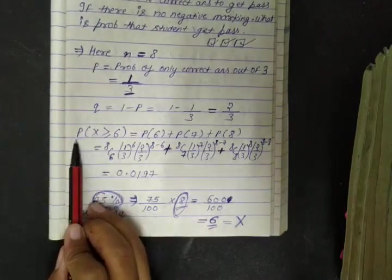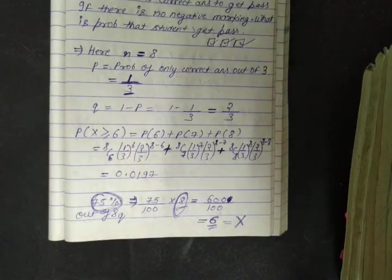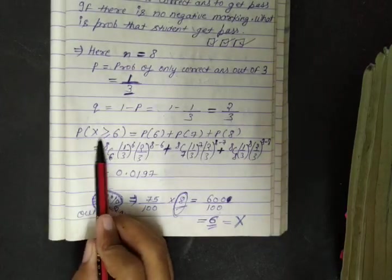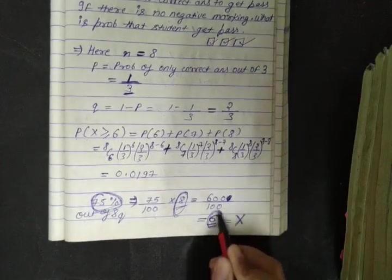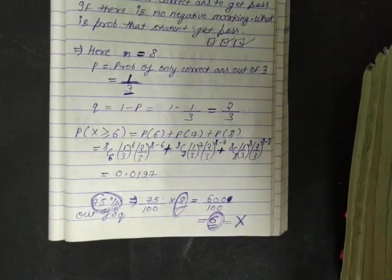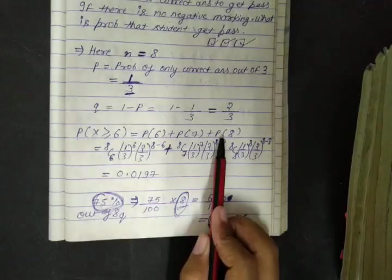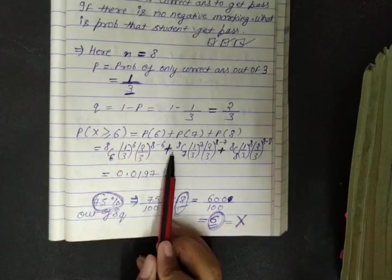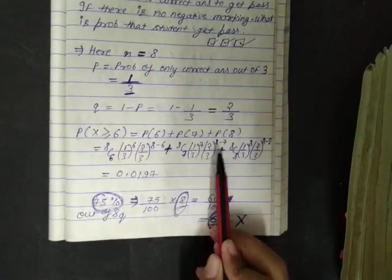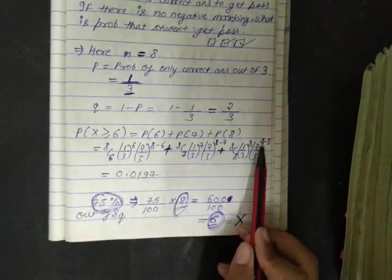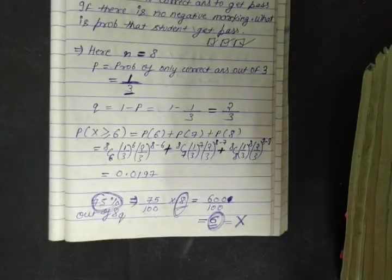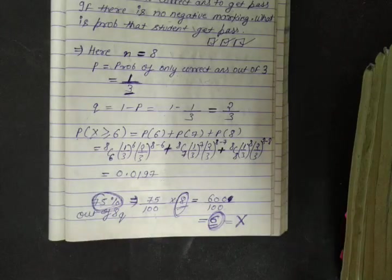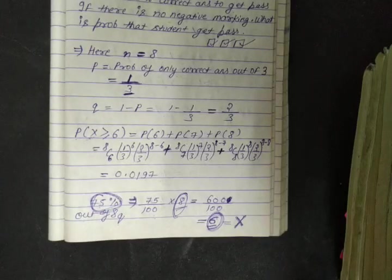The probability that the student gets passed means he secures at least 75% correct answers out of 8 questions, which is P(X ≥ 6). This equals P(6) + P(7) + P(8). Expanding: 8C6 × (1/3)^6 × (2/3)^2 + 8C7 × (1/3)^7 × (2/3)^1 + 8C8 × (1/3)^8, which gives a final result of 0.0197. So to determine the value of random variable x, we computed 75% out of 8 questions, giving x = 6 as the threshold to pass.